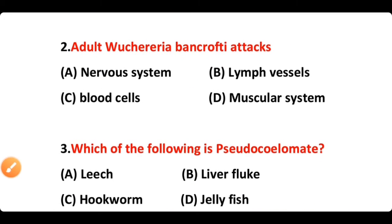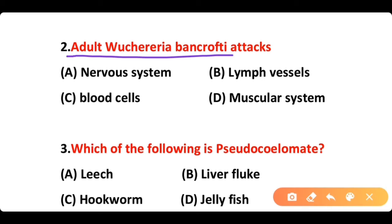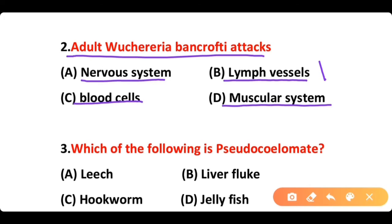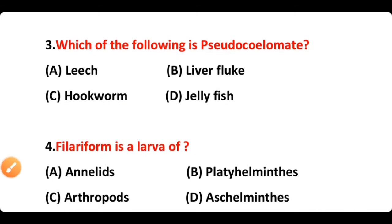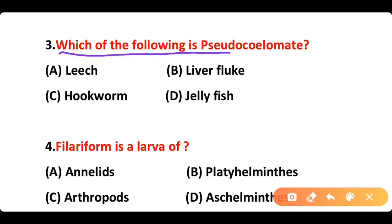Question number 2: Adult Wuchereria bancrofti attacks on: A) nervous system, B) lymph vessels, C) blood cells, D) muscular system. The correct answer is option B. Wuchereria bancrofti attacks on lymph vessels.